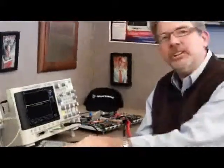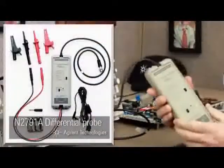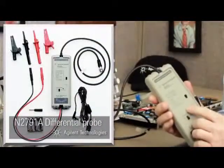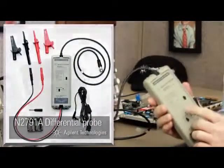The first step is to probe the differential CAN bus. Agilent recommends using the N2791A 25 MHz differential active probe. Let's begin.